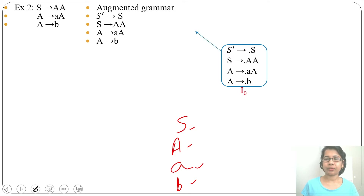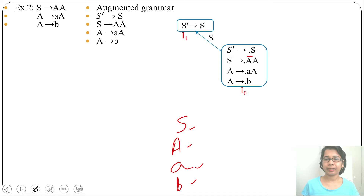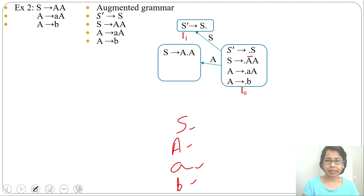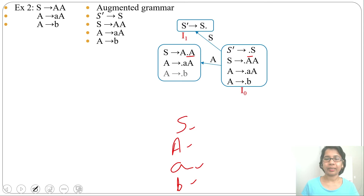From I0 by S it goes to state I1 with production S' → S•. Next, the A transition from I0: by A it goes to a new state with production S → A•A. There is a dot before variable A, so we write closure of A: A → •AA and A → •B. We assign state name I2.